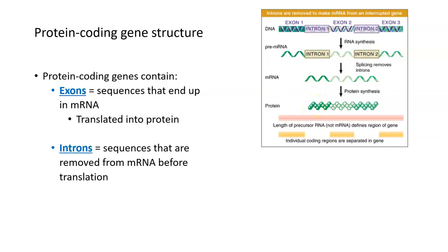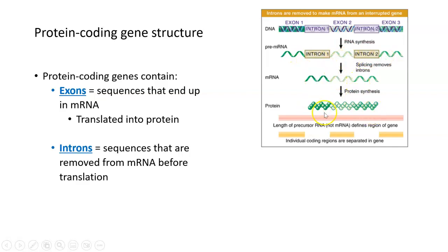Exons will exit the nucleus and become translated. Introns, however, are sequences that will be removed from the final mRNA before it's translated into protein. Introns stay inside the nucleus — they are synthesized in the pre-RNA and then cut out, so they are never translated into protein. It's your exons that become the protein via translation; they exit the nucleus, while introns stay in the nucleus and are removed.